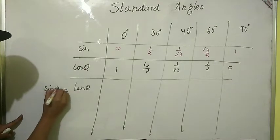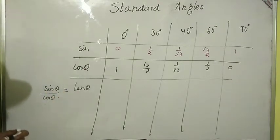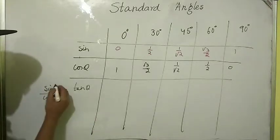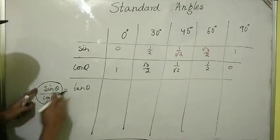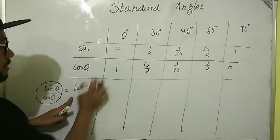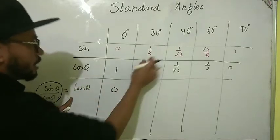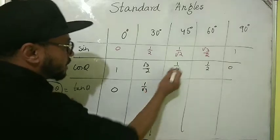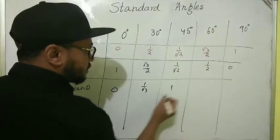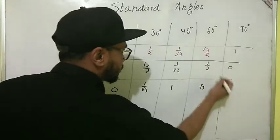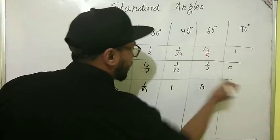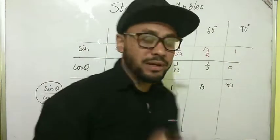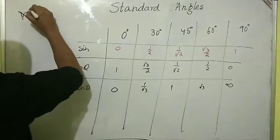For tangent, we use the formula tan θ = sin θ / cos θ. So: tan 0° = 0/1 = 0, tan 30° = (1/2)/(√3/2) = 1/√3, tan 45° = (1/√2)/(1/√2) = 1, tan 60° = (√3/2)/(1/2) = √3.